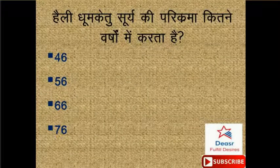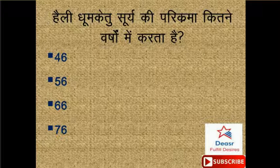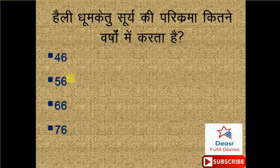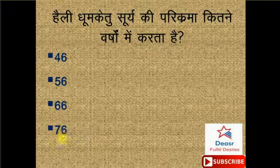Halley's dhumketu surya ki parikrama kitne varshon mein karta hai? Options: 46 years, 56 years, 66 years, 76 years. Option number D yahan pe correct hai - 76 varshon mein surya ki ek baar parikrama Halley's dhumketu karta hai.